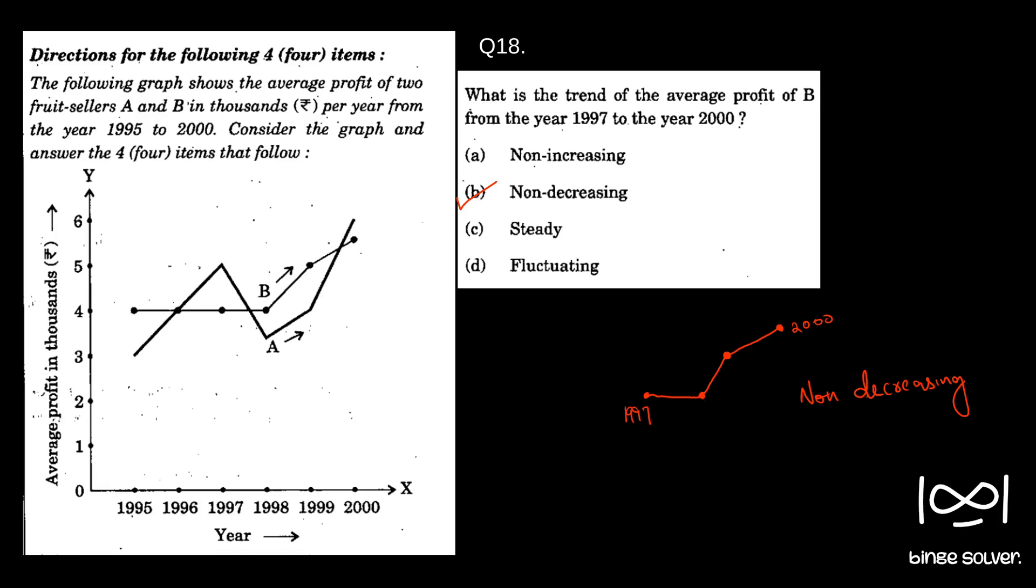Next question, question 19. The following table shows the marks obtained by two students in different subjects. A table is given. The question is the difference in the mean aggregate percentage marks of the students.